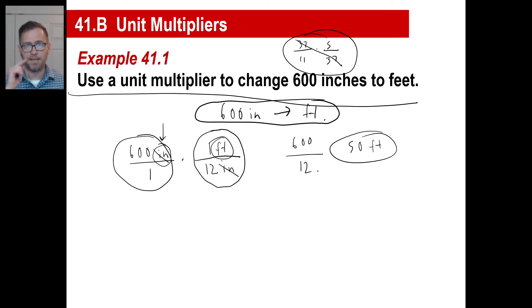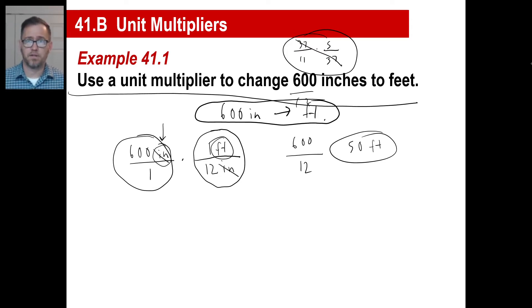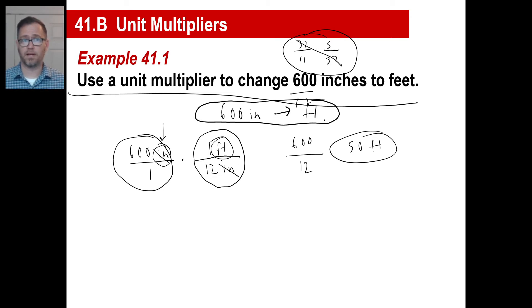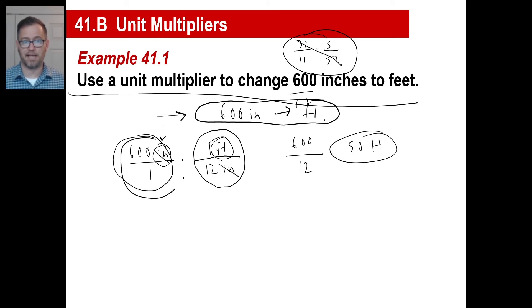Now I want to caution you — do not be tempted to go, oh I don't need to know how to do this. That'll work for 600 inches to feet, but when you get to something like convert 3 billion cubic inches to cubic miles, it ain't going to happen. So use the method. Number one: write this as a simplified problem. Number two: write what you are given as a fraction. Number three: multiply by a second fraction with the same unit on the bottom and go from there.